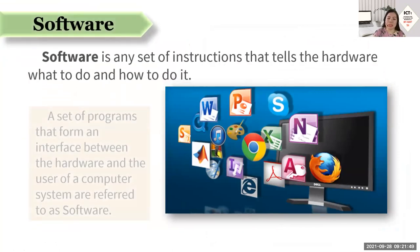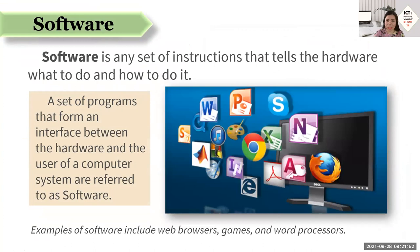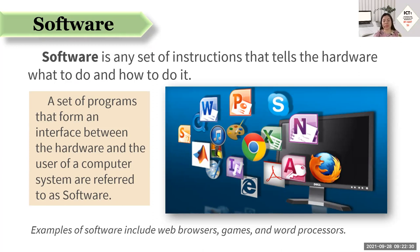Another element is the software. Software is any set of instructions that tells the hardware what to do and how to do it. Without the software, the hardware is useless, because it's the software that tells or instructs the hardware what to do. It is a set of programs that form an interface between the hardware and the user of a computer system. Examples of software include web browsers, games, word processor, Excel, PowerPoint — any applications which you are using to perform a specific task.